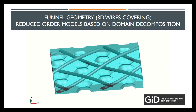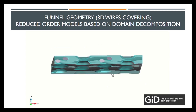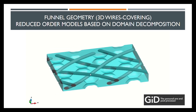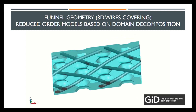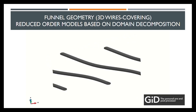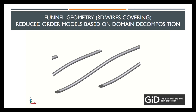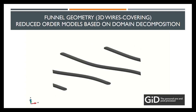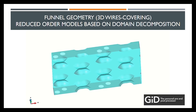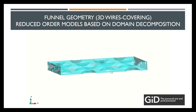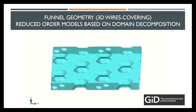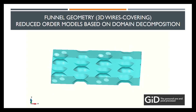GID also allowed us to create the three-dimensional geometry of the braided wires. Using as path lines the one-dimensional models and performing sweep operations, we could obtain the three-dimensional model of a unit cell of the structure. We used different layers for creating the wires and the silicon, then created different reduced order models where we embedded unit cells, accounting for the stent.